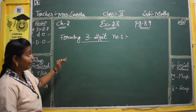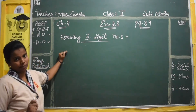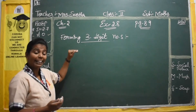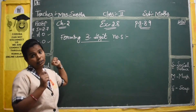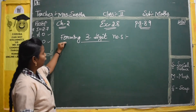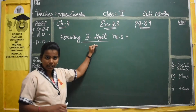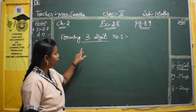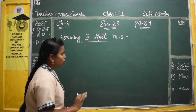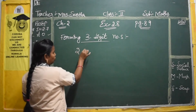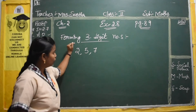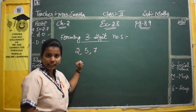You have to form the numbers and then arrange them in ascending order and descending order. Forming three-digit numbers means you are going to have three digits in your question. Suppose we take 2, 5, and 7 — these are the three digits. You have to form different sets of numbers using only these three digits.